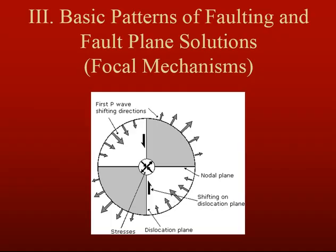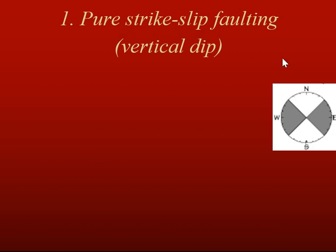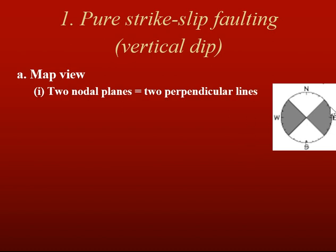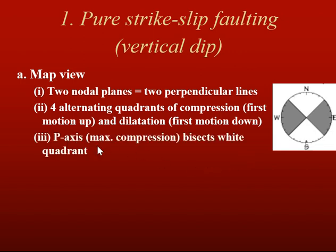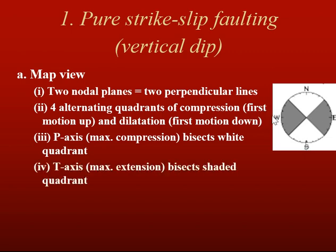I want to end this lecture by focusing on basic patterns of faulting and fault plane solutions, and how those focal mechanisms relate to those faulting patterns. The first is a pure strike-slip fault with a vertical dip. In map view, there are two nodal planes perpendicular to one another, and four alternating quadrants of compression and dilation — first motion up and first motion down. The p-axis, the axis of maximum compression, bisects the white quadrant; the t-axis, maximum extension, bisects the shaded quadrant.